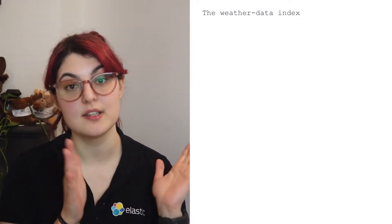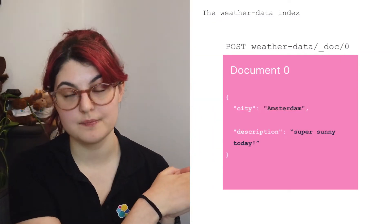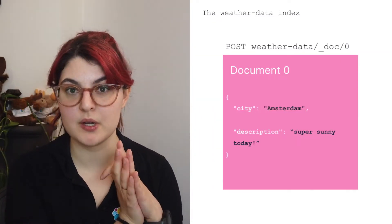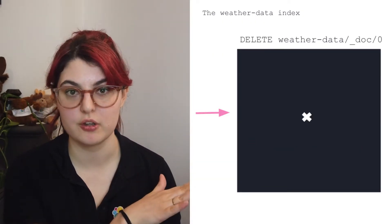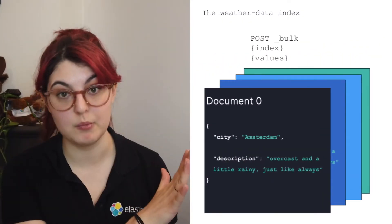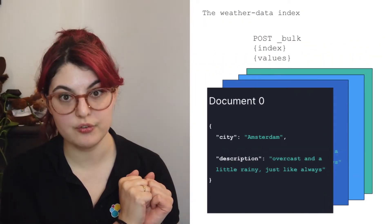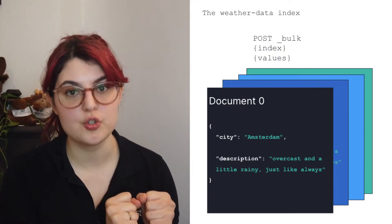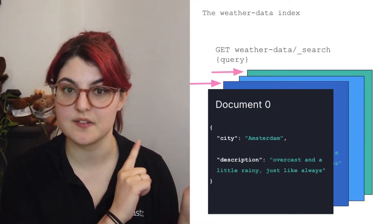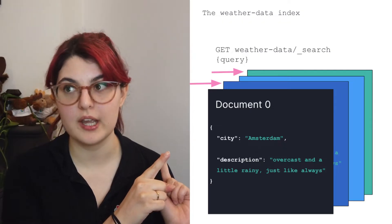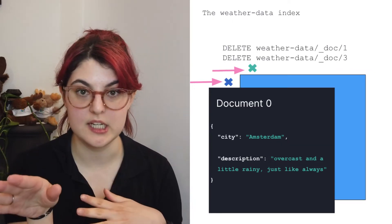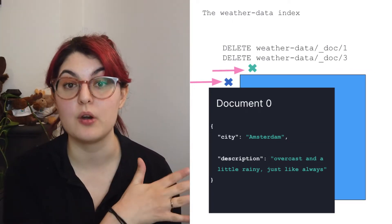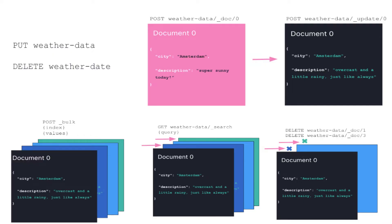We can send a request that says: take this document and put it in my index. Actually, I changed my mind about some details — can you modify it? Actually, all of it was wrong, delete that document. Take all these other documents and send them all to my index. Let me see what you've indexed so far. Actually, I just want to see those specific documents that satisfy these conditions. What about this condition and this other condition? Delete this subset of documents and give me a report about whatever's left in my index. And these are some of the basic commands that you can use to interact with Elasticsearch.